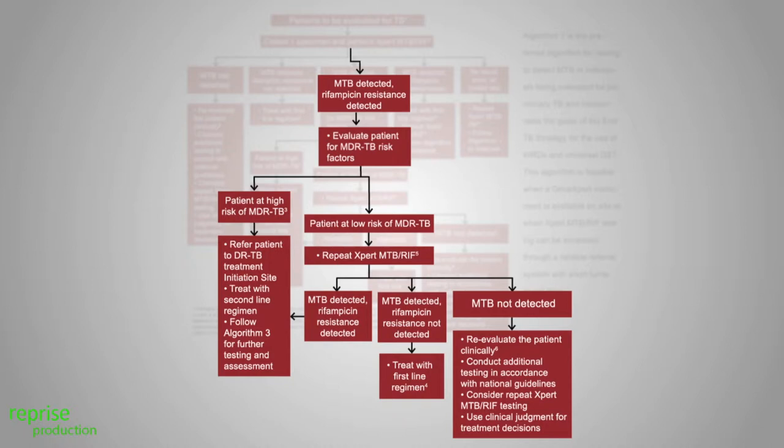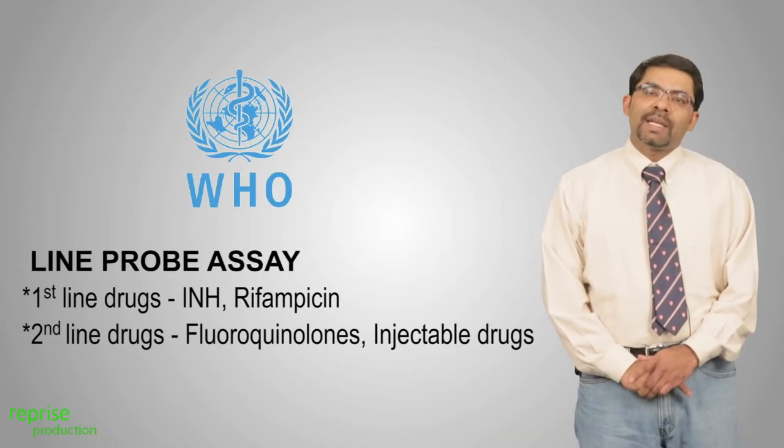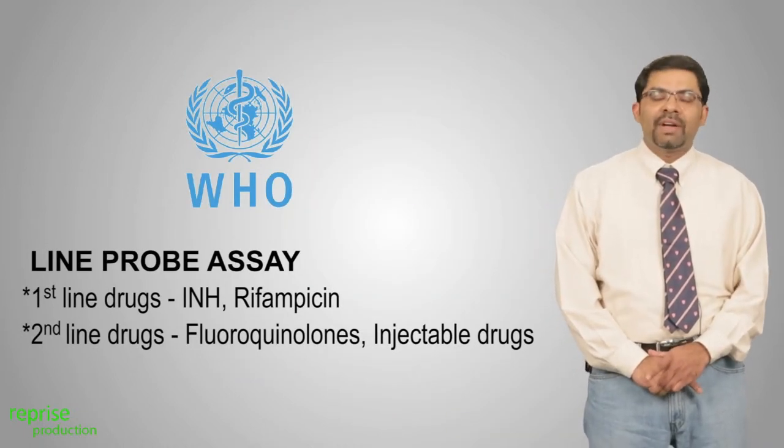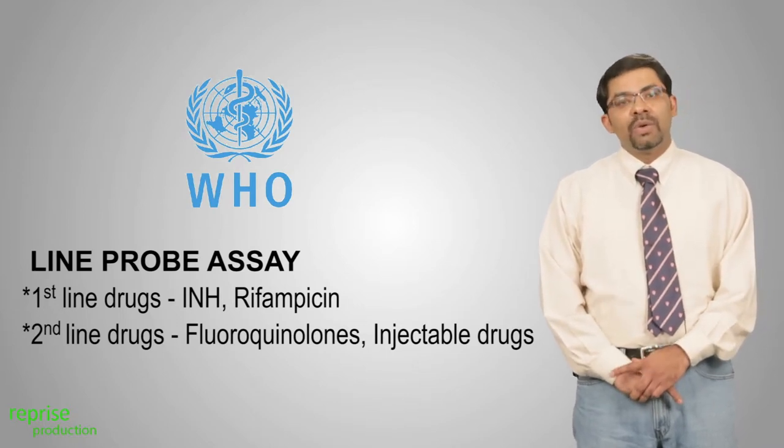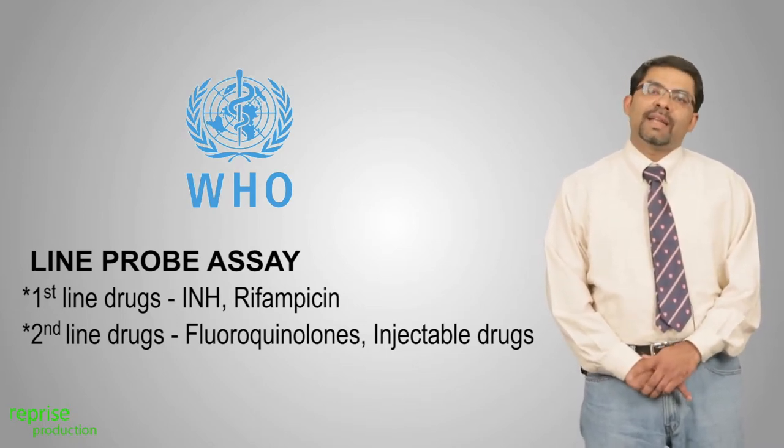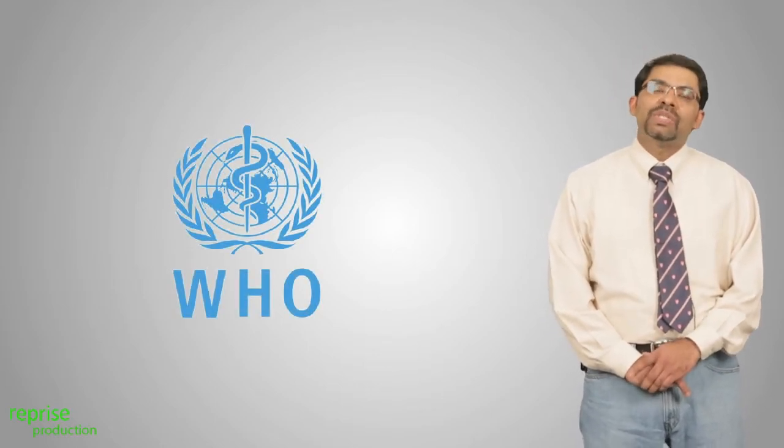So what other tests could you use in a rifampicin resistant patient? Well you could use a line probe assay. There is a line probe assay for first line drugs, INH and rifampicin. There is a line probe assay for second line drugs, which includes fluoroquinolones as well as second line injectable drugs. Both LPAs are available in India and approved by World Health Organization and can be used as a follow-up test to rifampicin resistance.